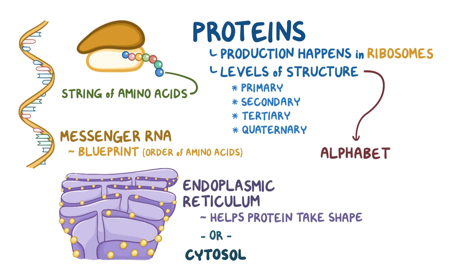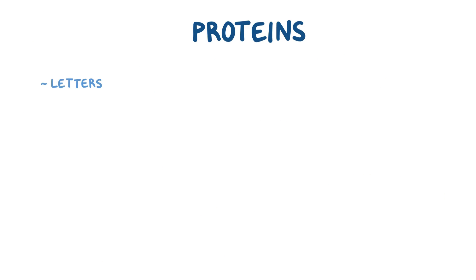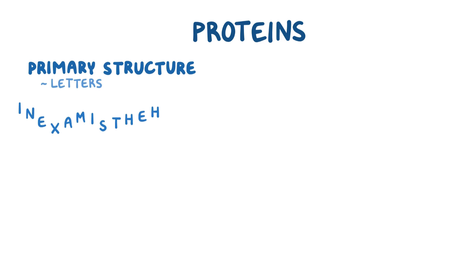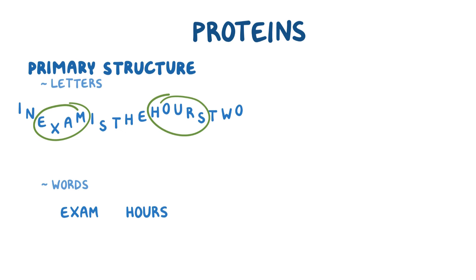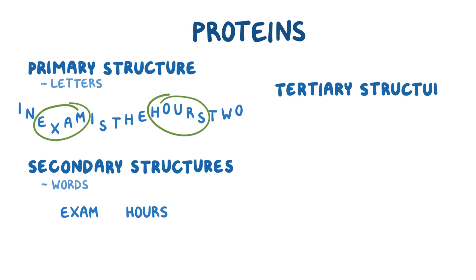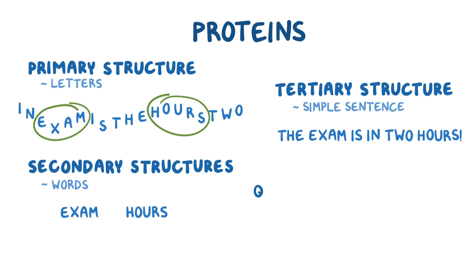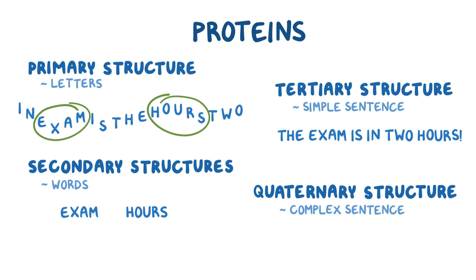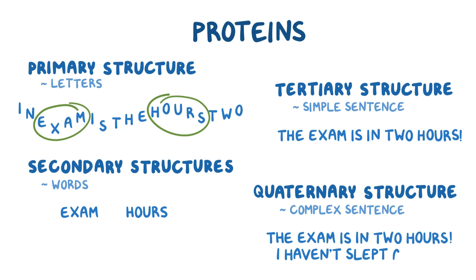As an analogy, think about the alphabet. It can be used to create words, which can make simple sentences, which can further be made into complex sentences. The letters themselves would be considered the primary structure. Simple words like 'exam' and 'hours' would represent secondary structures. Tertiary structure would be when the entire chain folds together, making a simple sentence like 'the exam is in two hours.' And the quaternary structure might be a few peptide chains coming together, forming a complex sentence like 'the exam is in two hours and I haven't slept at all.'